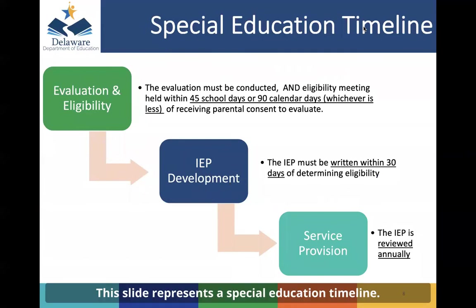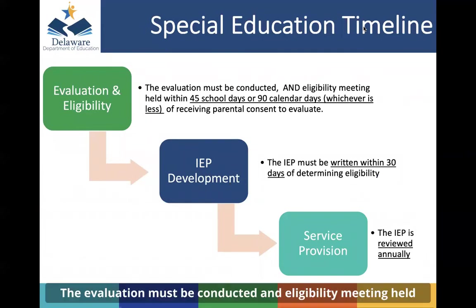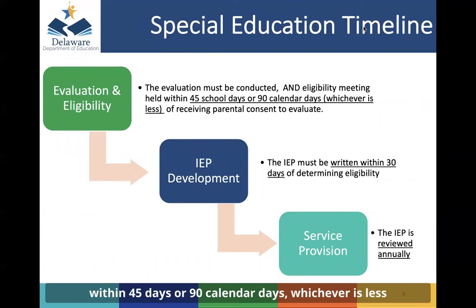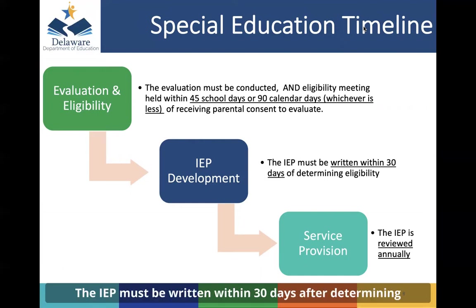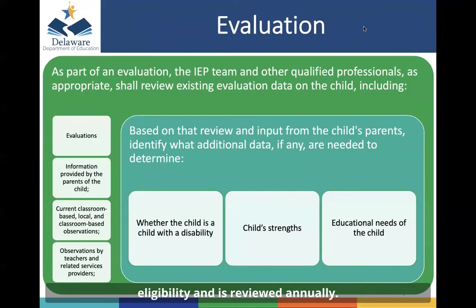This slide represents a special education timeline. The evaluation must be conducted and eligibility meeting held within 45 days or 90 calendar days, whichever is less, of receiving the parental consent to evaluate. The IEP must be written within 30 days after determining eligibility and is reviewed annually.